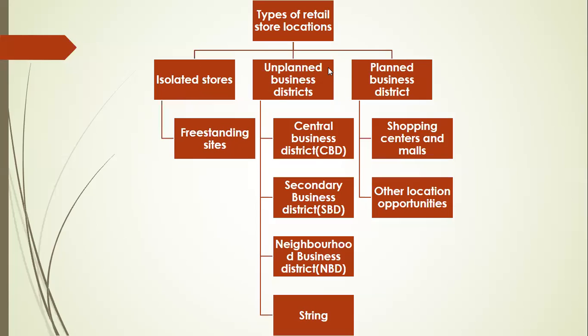Next is unplanned business district. Under this unplanned type we have four types: central business district, secondary business district, neighborhood business district, and strings. Under central business district, it is the major concentrated area where there will be more people, more business, more stores. Next, secondary business district has a little less people compared to central, but stores will be available.